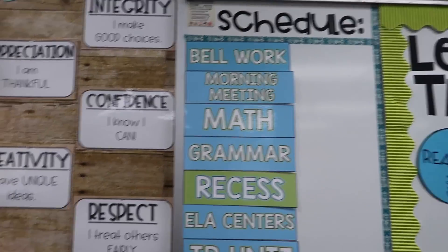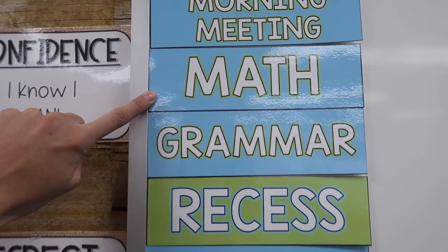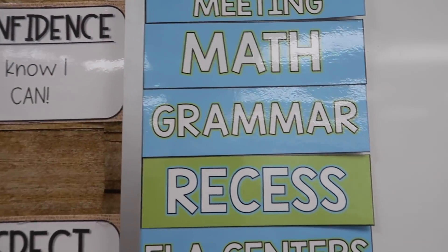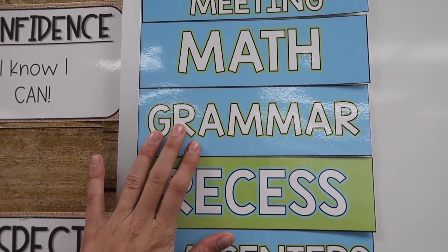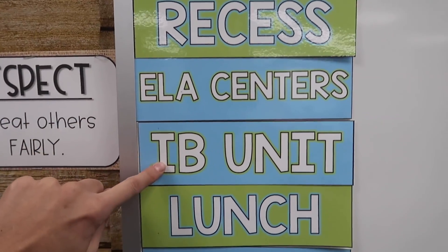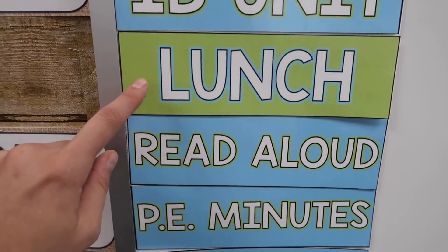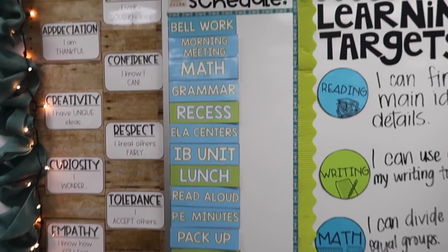Today is Thursday and I'm going to be doing a classroom vlog. Our Thursdays are short days because we have school PD after school, so we get out at 1:50. We have a lot to cram into a shorter than normal day, so I'm just going to jump right in and show you what we have going on. For bell work today we're doing a Common Core review, then morning meeting. For math, we're talking about word problems — deciding if we need to multiply or divide. We're working on conjunctions for writing, so we're going to do something fun with our grammar block. Then recess, centers, and we started our traditions unit. Lunch, read aloud, PE minutes, and then we go home. The day is going to go really fast.